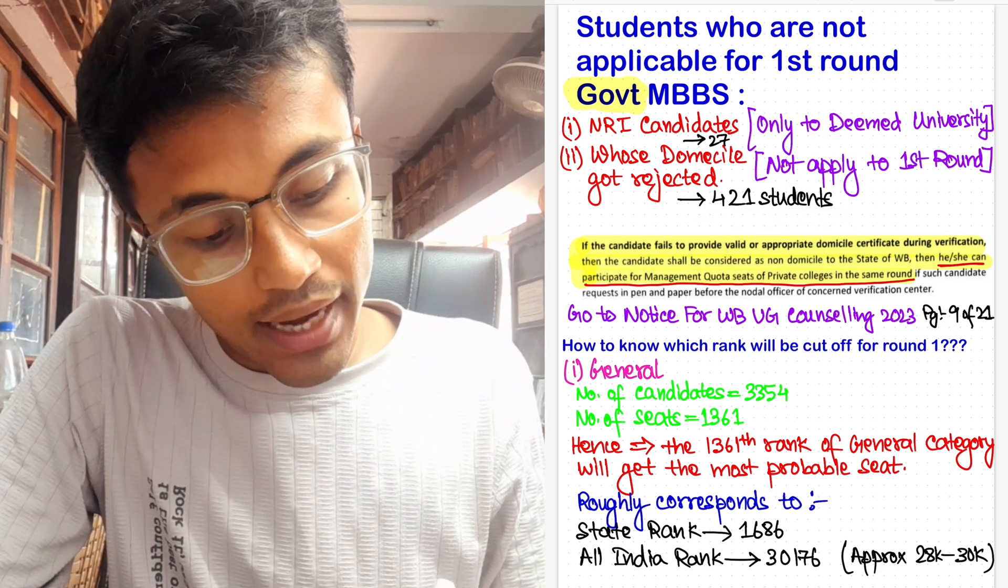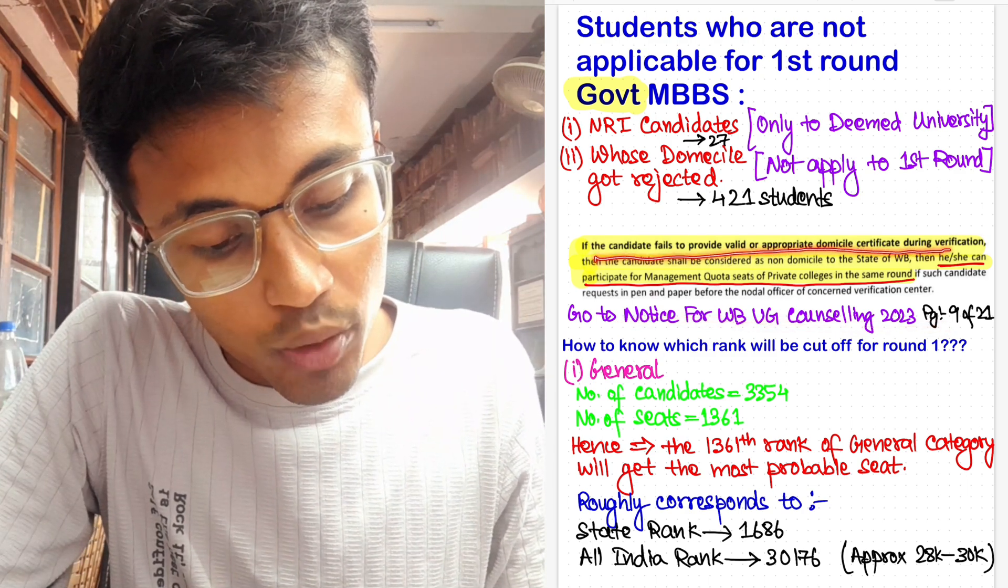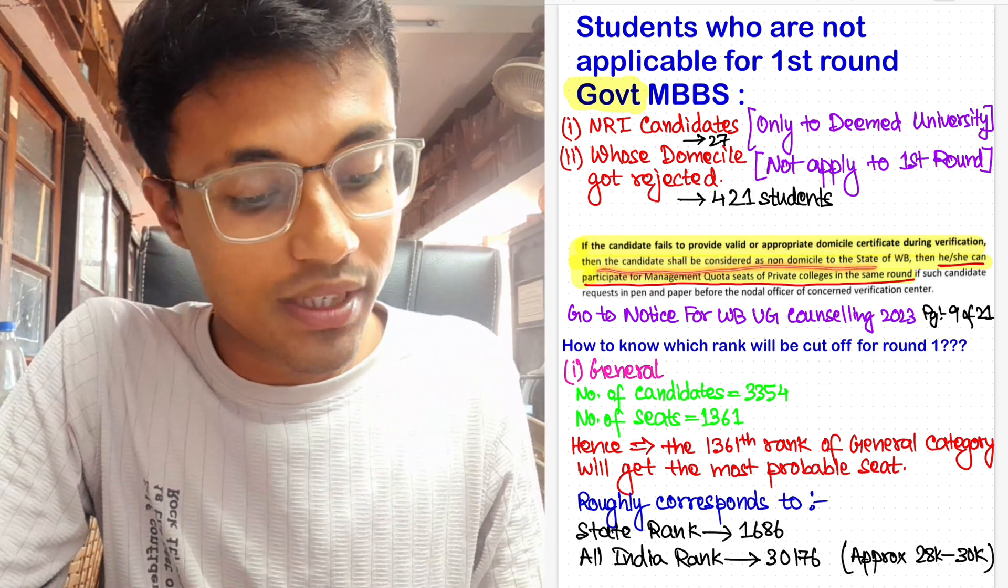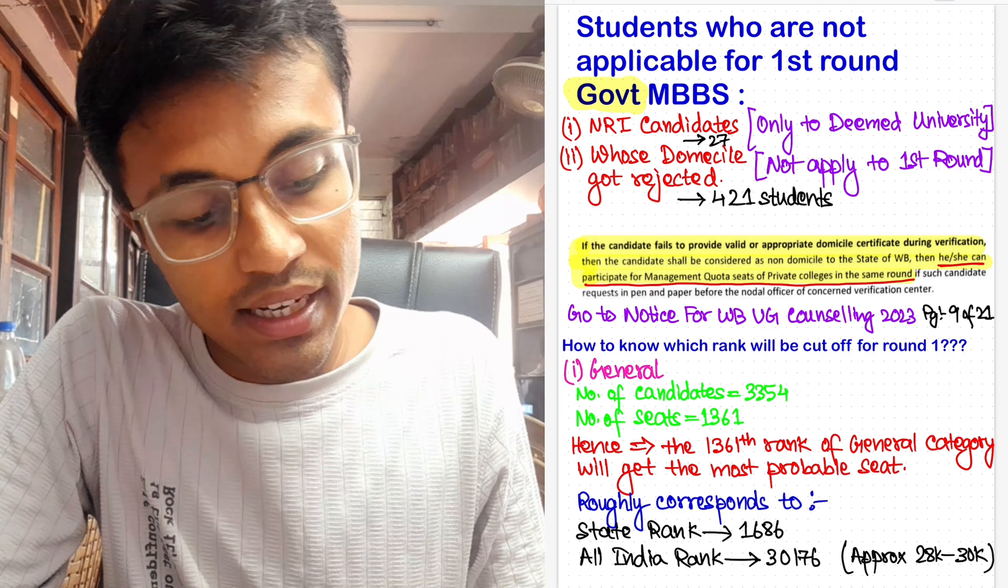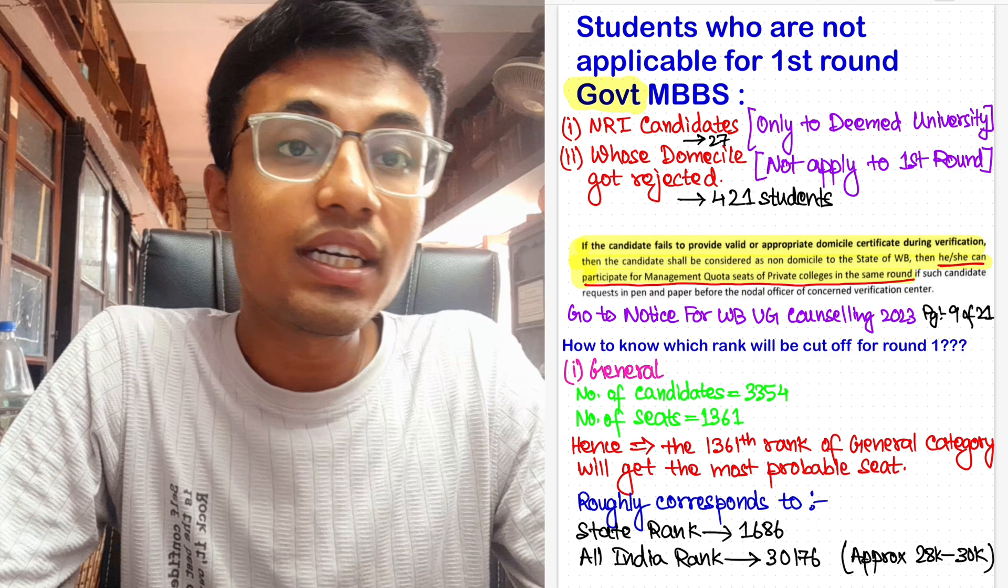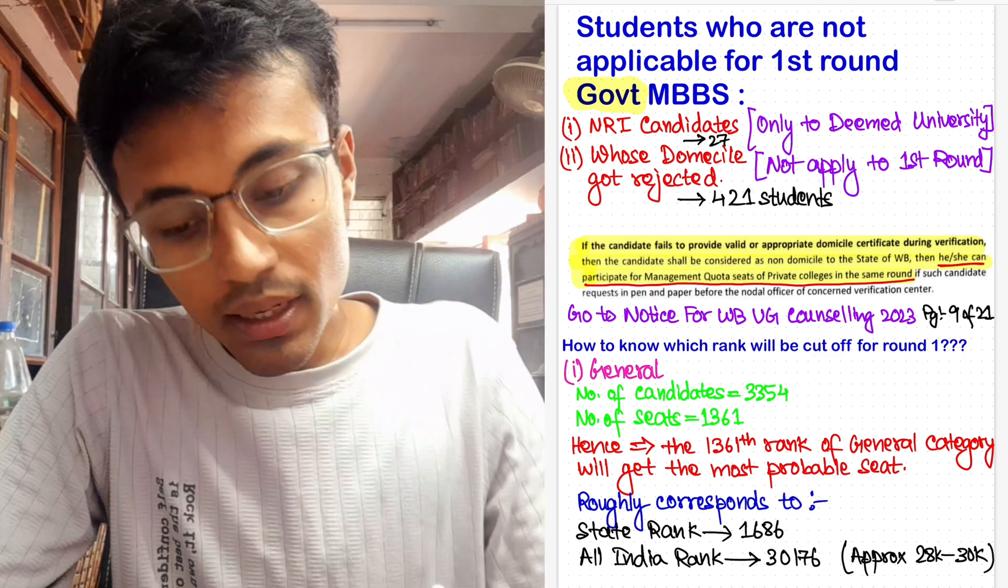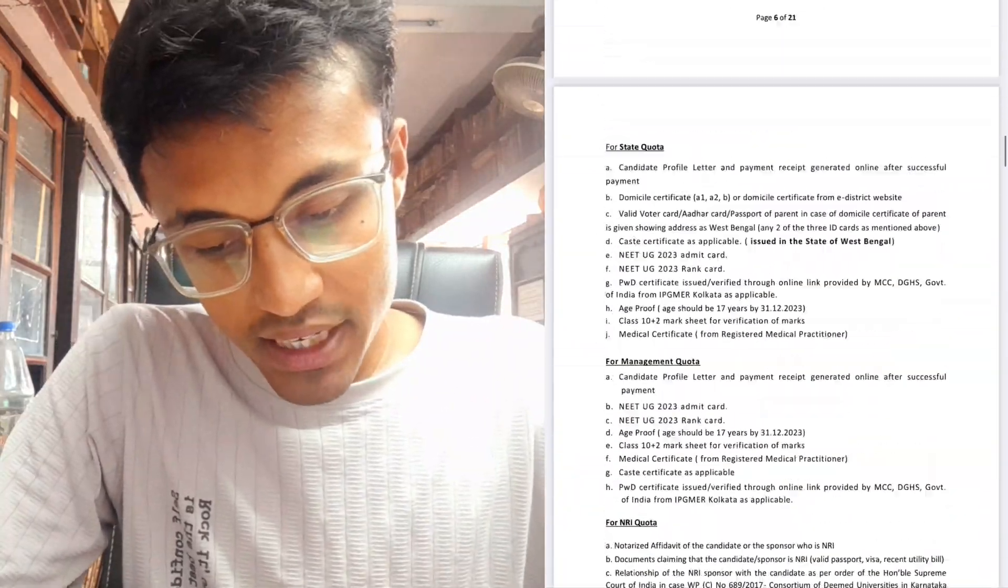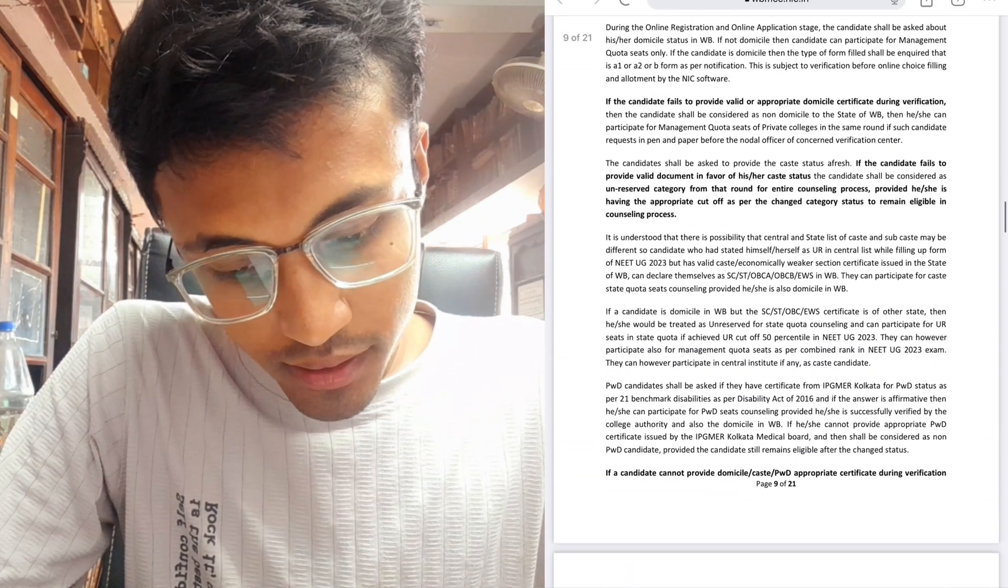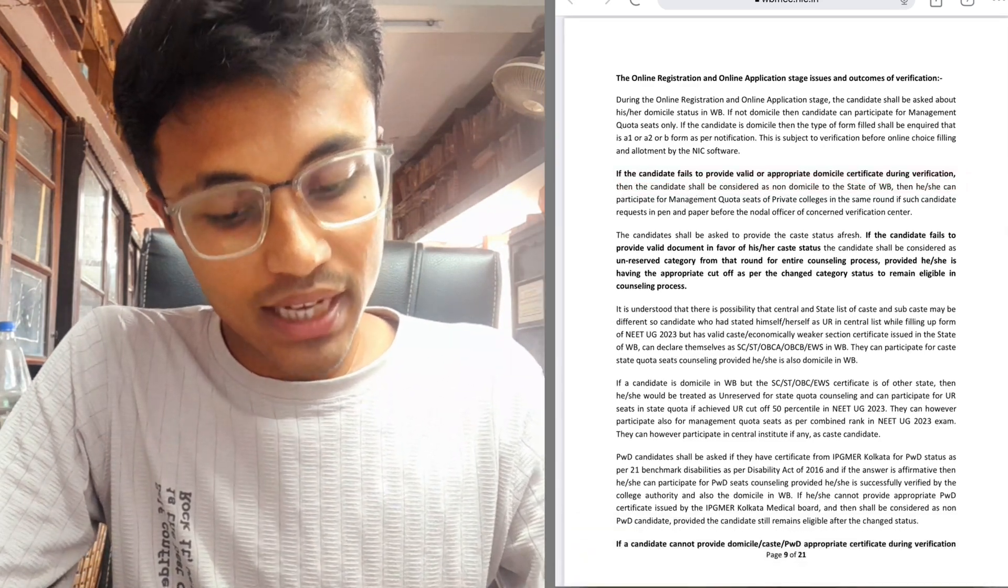And as you can see on page 9 of the information bulletin, if the candidate fails to provide valid or appropriate domicile certificate during verification, then the candidate's status will be considered as non-domicile to the state of West Bengal. Then he or she can participate for management quota of private colleges in the same round. They can participate in management quota, but they are not eligible to participate in state quota for round one. And this is given in the information bulletin on page 9.